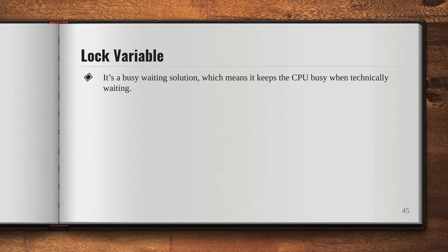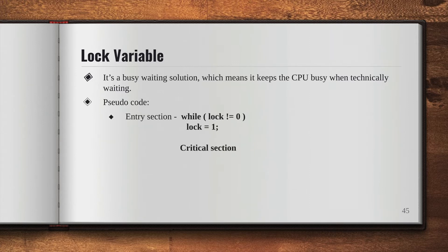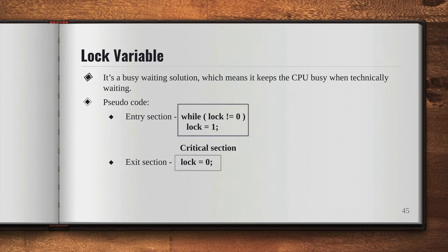Let me show you how that works with a pseudo code. In the entry section there is a condition: while lock is not equal to zero, then lock equals one. Then you have the critical section, and after that the exit section.